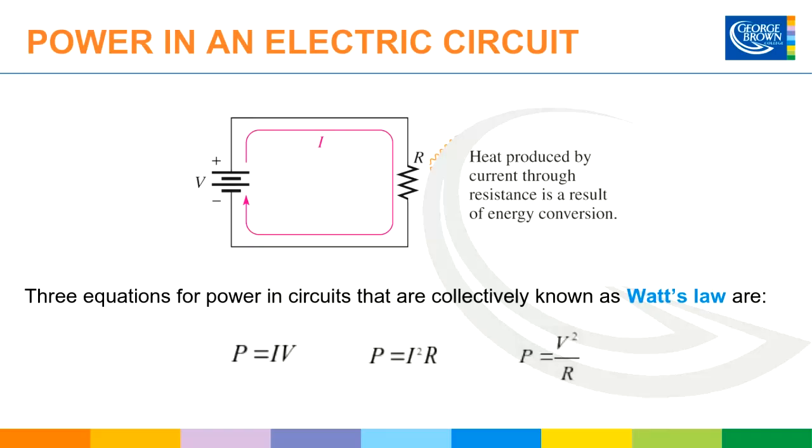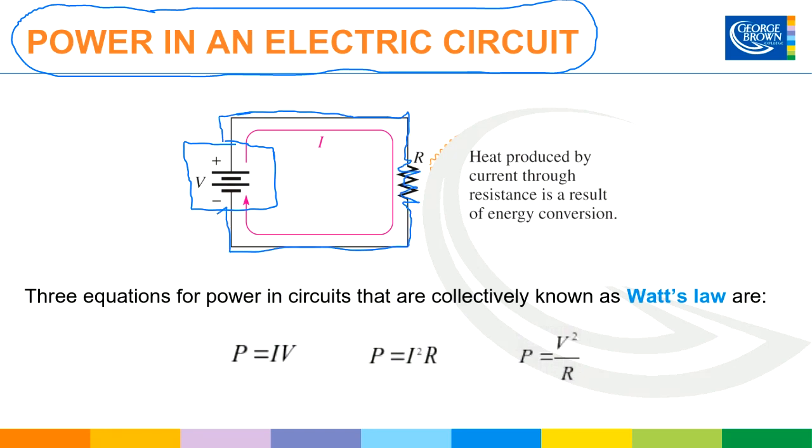What happens with power specifically in an electric circuit? We have our voltage source connected through a load, which is some kind of resistance, connected back to the negative side of the battery. The resistor creates some form of heat—that's the byproduct when you put electricity through a load.